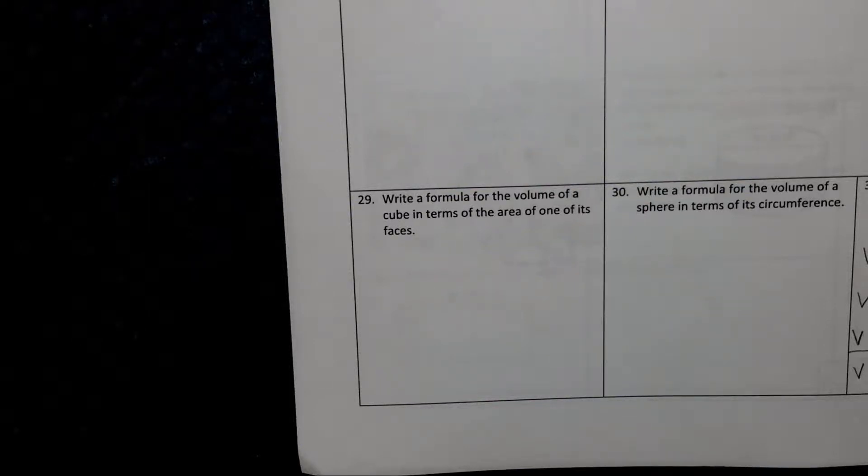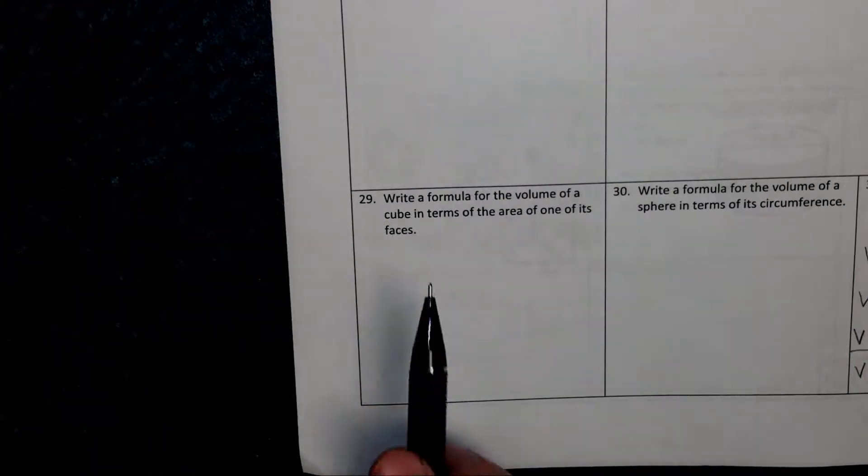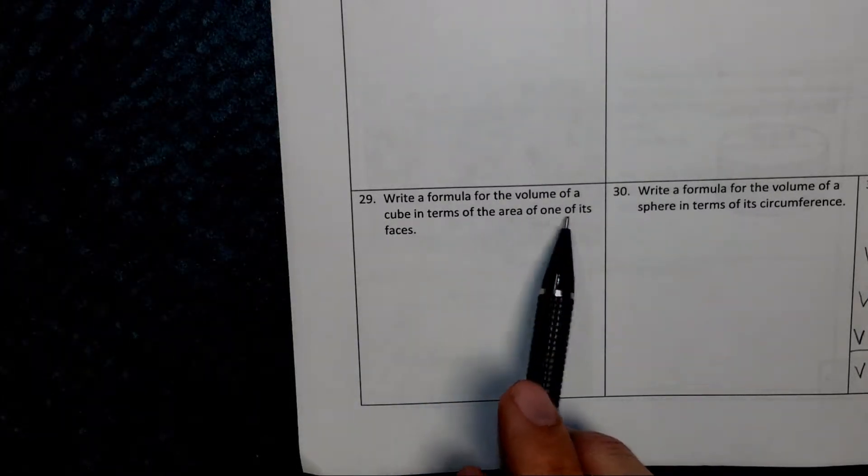Let's try number 29. Here I want to write a formula for the volume of a cube in terms of the area of one of its faces.